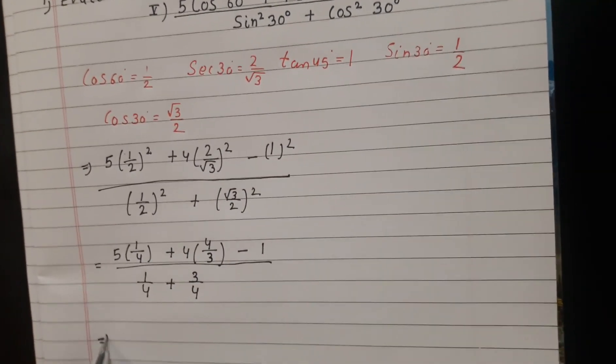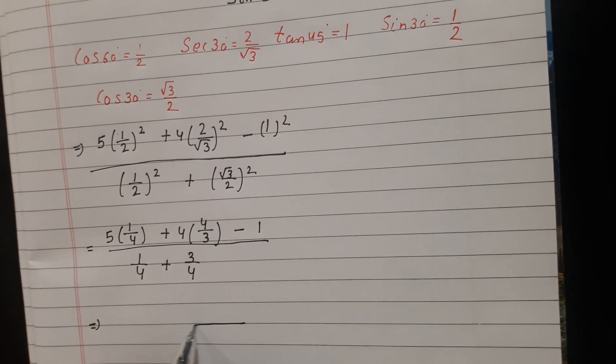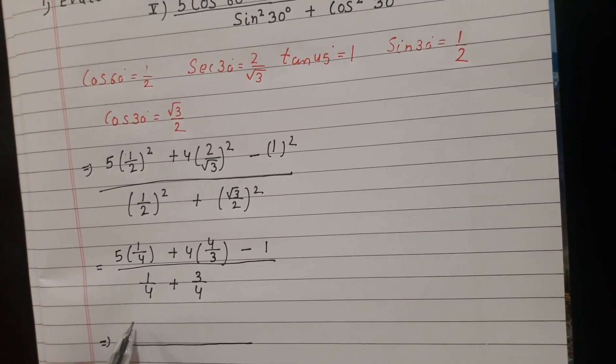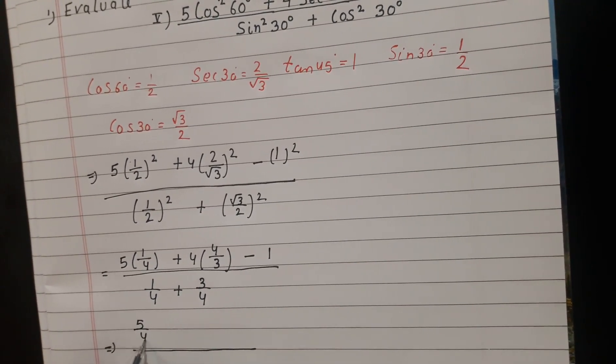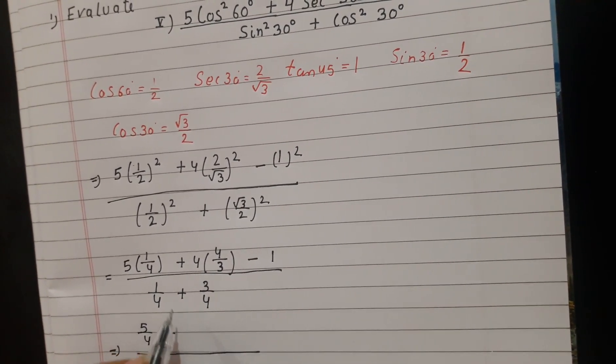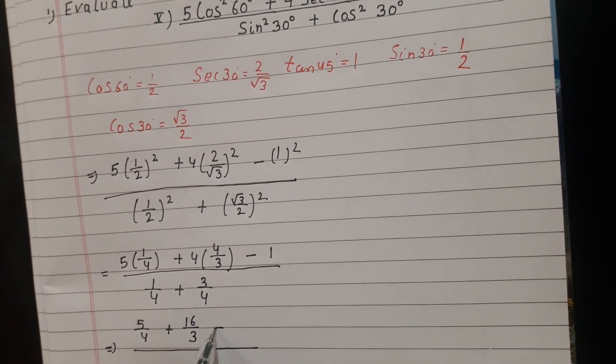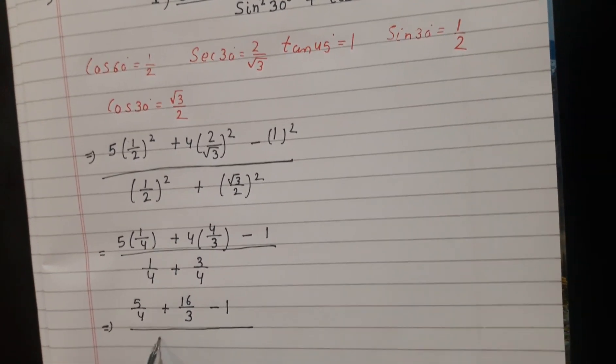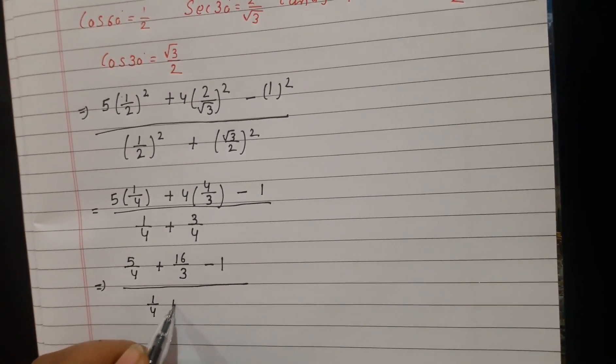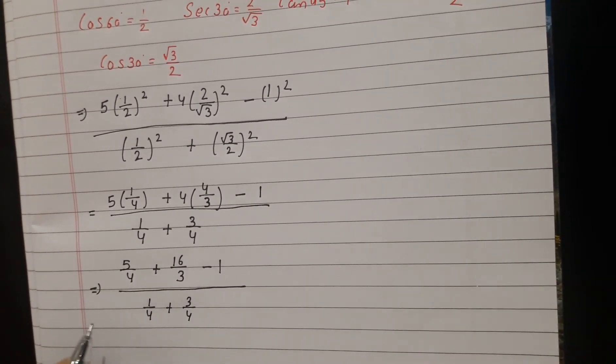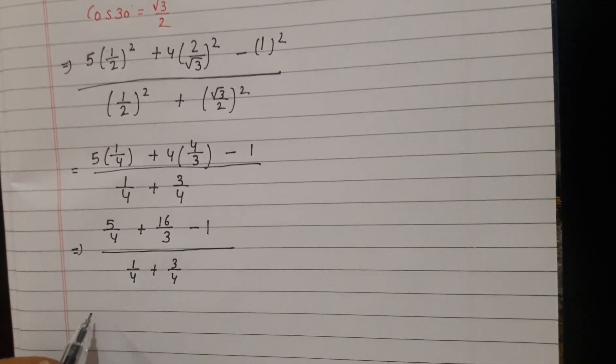Now we have to solve it with LCM. First we multiply them. 5 into 1 is 5 by 4, 4 into 4 is 16 by 3, minus 1. 1 by 4 plus 3 by 4.